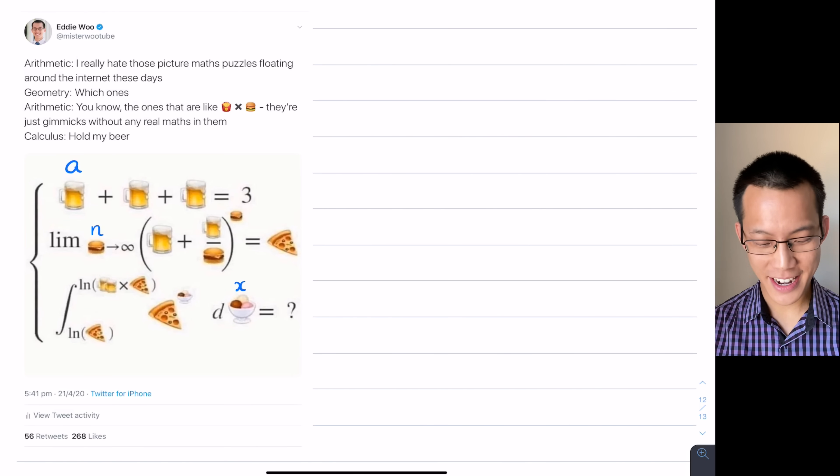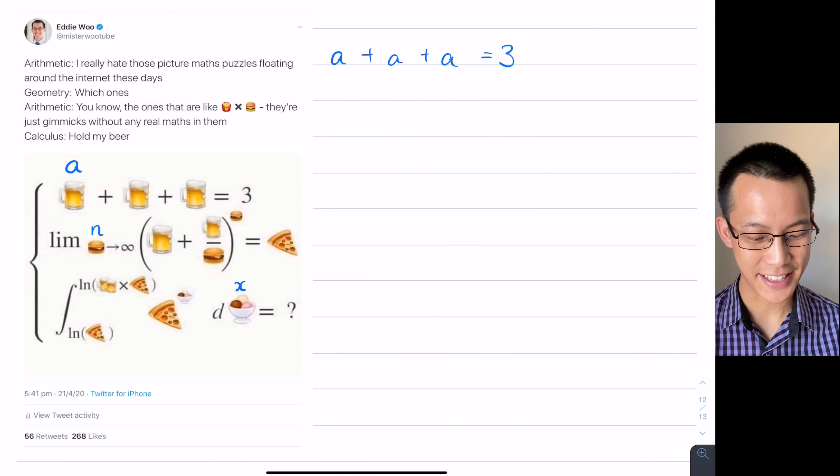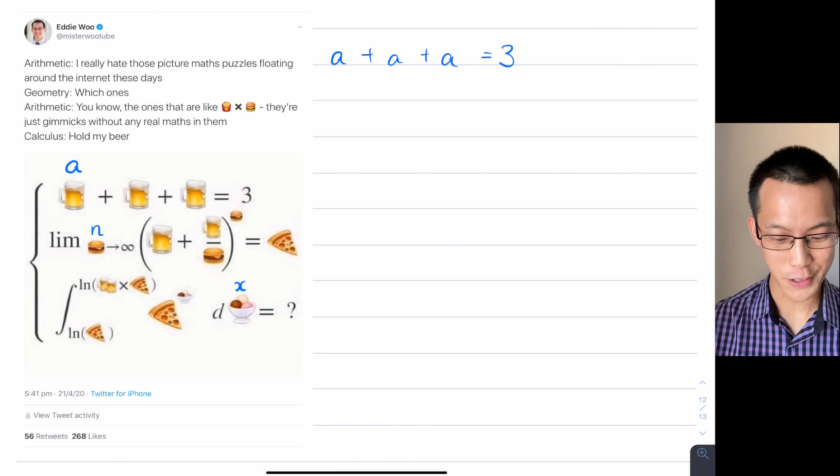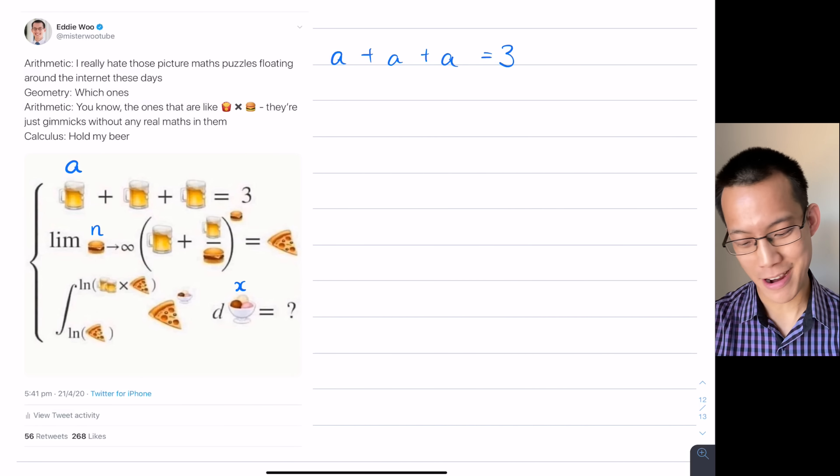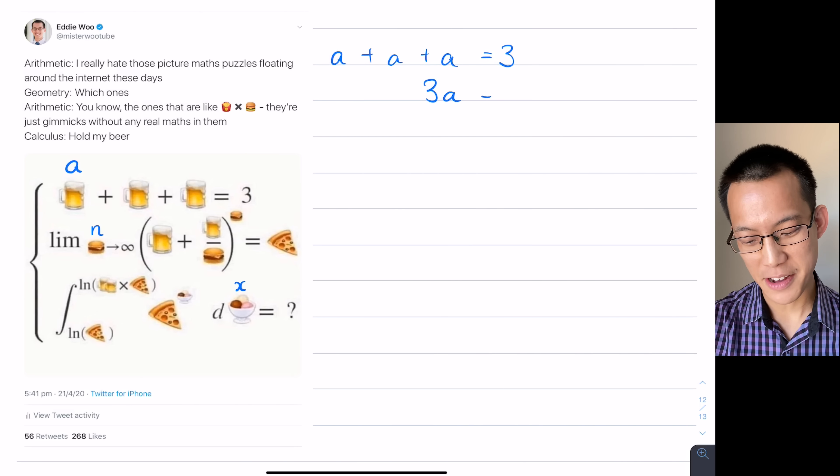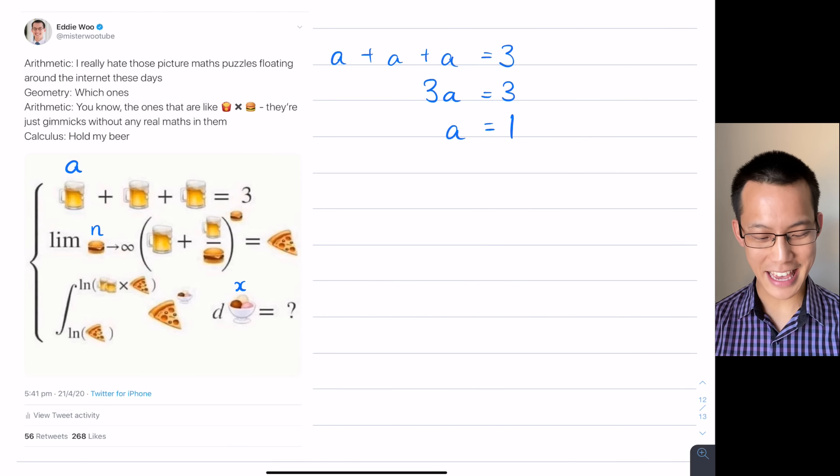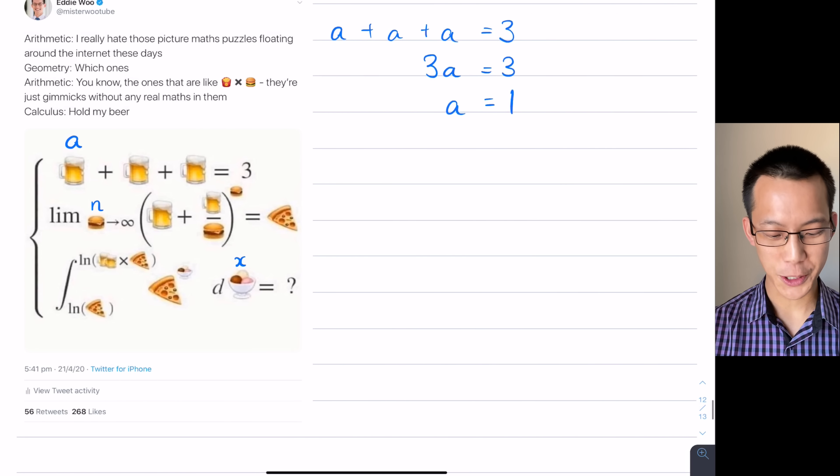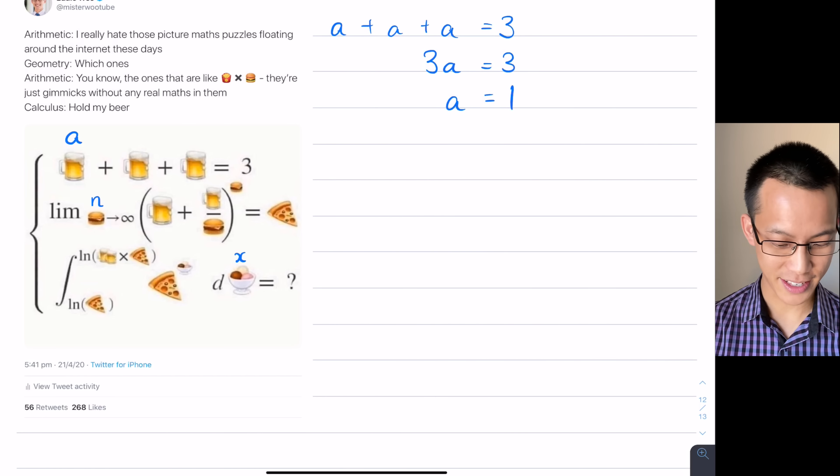Let's start off by having a look at the first and the easiest line. If I were to write this with just letters, I would be using A plus A plus A, and that would be equal to three. So before we get to the next line, there's three lots of a thing and that equals three. So I could write this as 3A equals 3. And most people are pretty content to say, therefore A equals one.